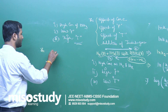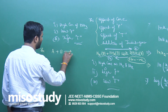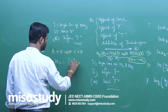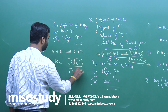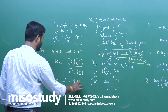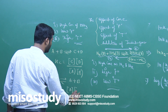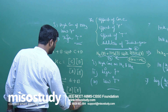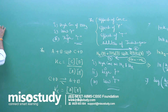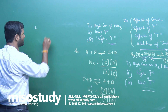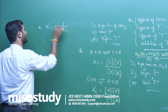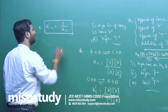Regarding the importance of KC relations: suppose A plus B gives C plus D — KC equals [C][D]/[A][B]. If we reverse the reaction, C plus D gives A plus B, then K'C equals [A][B]/[C][D]. The two constants are reciprocals of each other. When we reverse a reaction, the new equilibrium constant is the reciprocal of the original.